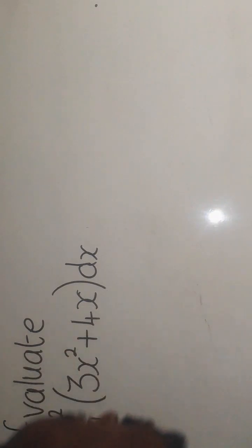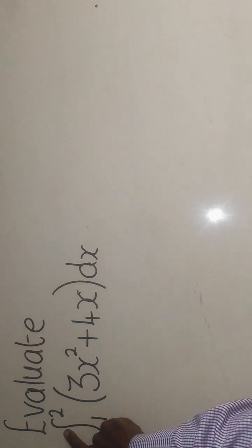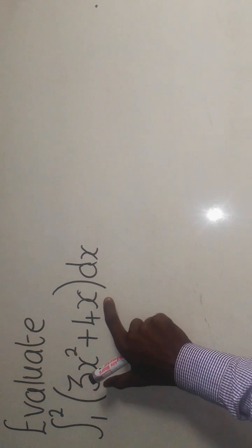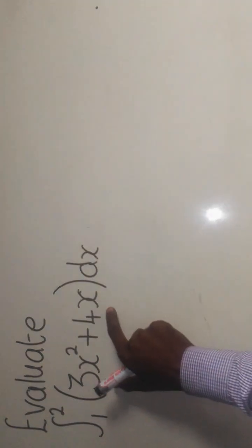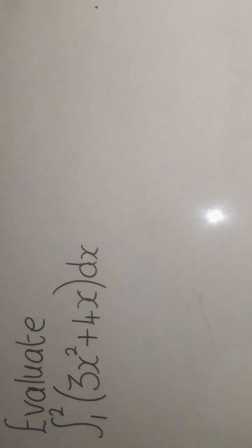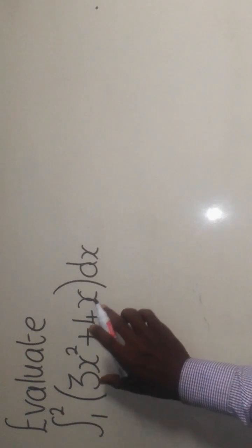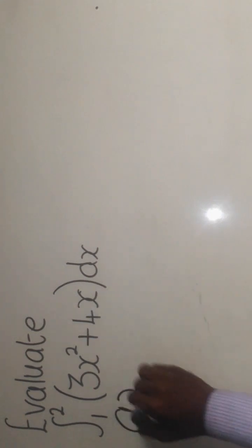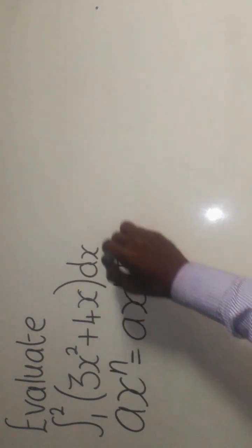We have a mathematics question that says evaluate. This symbol simply means integration. This is the lower limit, the upper limit of this polynomial with respect to X. What they want is for us to find the area formed by this equation here. To integrate this polynomial of such kind, it will be changed into this form here.